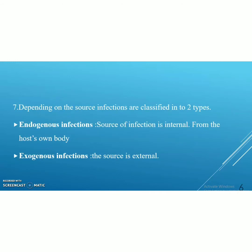Depending on the source of infections, they can be classified into two types: endogenous infections and exogenous infections. Endogenous means the source of infection is internal — from the body of the host itself. This is mainly caused by the normal flora of the host, which can act as opportunistic pathogens when the immunity of the host is lowered.